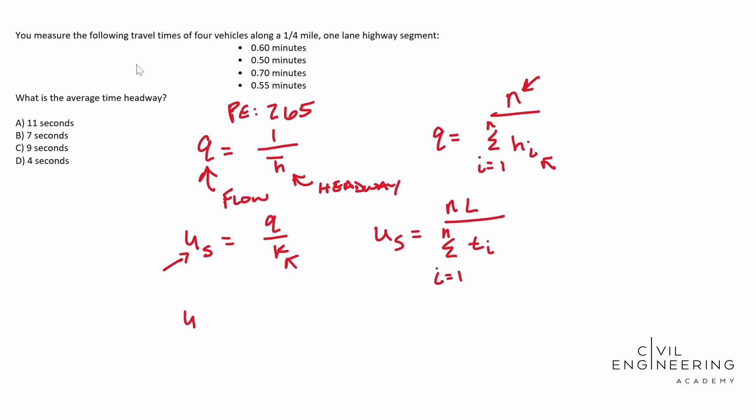So let's go ahead and do that. Our space mean speed for this guy is going to be four vehicles because we have one, two, three, four vehicles times our length of segment, which we're going to go ahead and put this in decimal form, 0.25 miles. And then we need to put that over our individual times. So we need to add our times up.